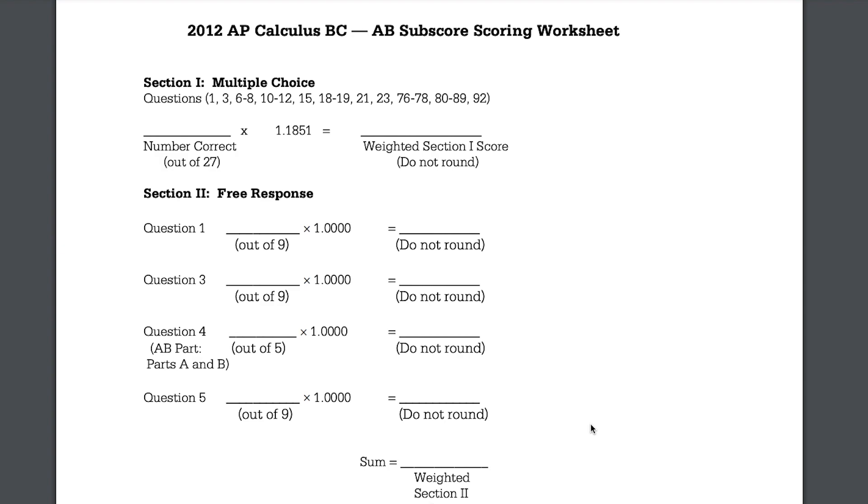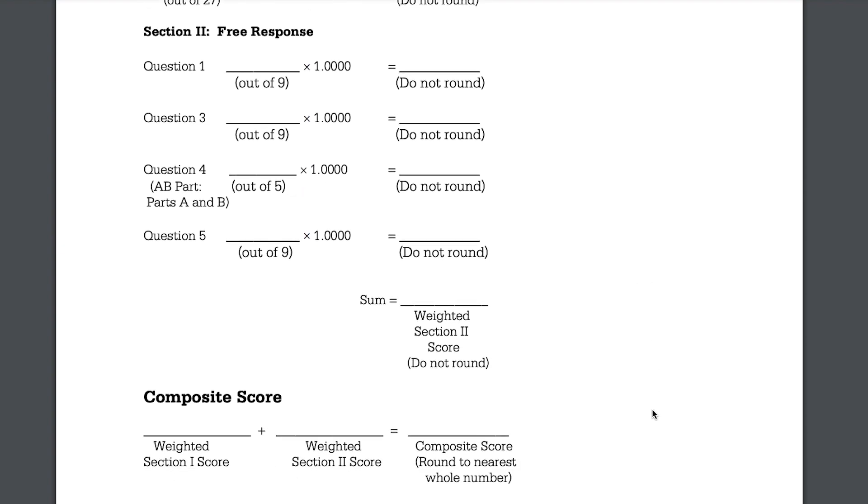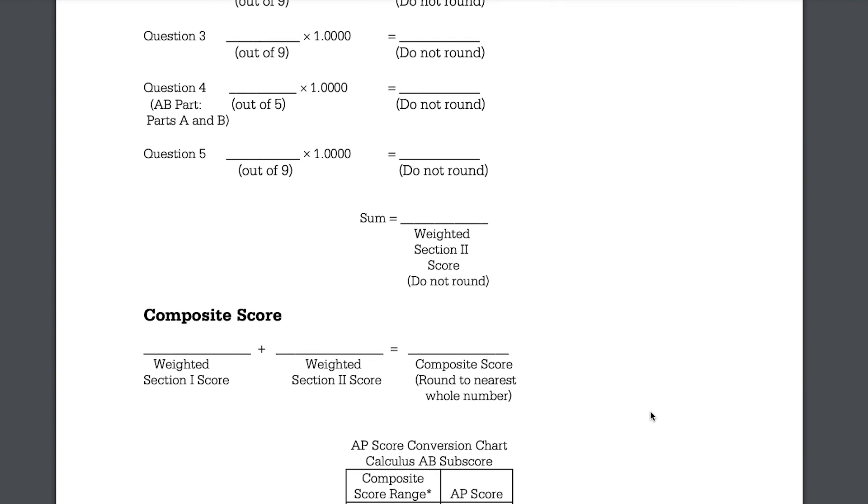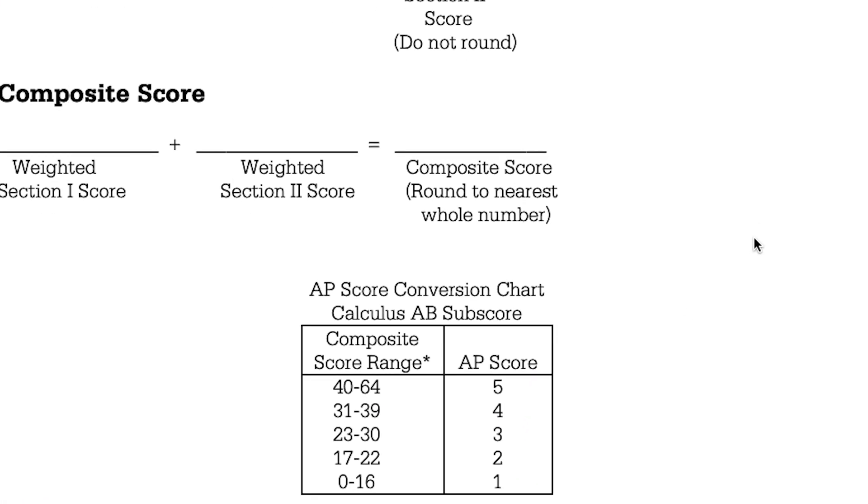And what's nice about these scoring worksheets, those of you taking BC, they have an AB subscore worksheet so that you could see what would your score be on the AB portion of the exam. So once again, if you missed the 5 on Calc BC, you could see how you would do on the Calc AB portion of the exam.